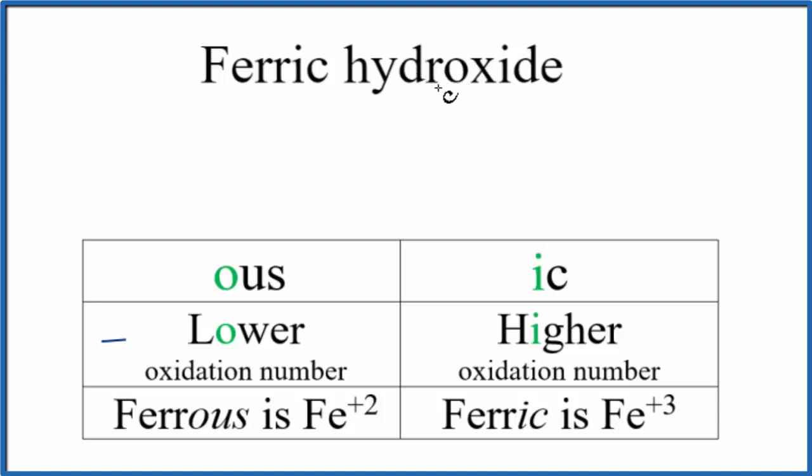In the common naming system, if we have IC that means we're going to use the higher oxidation number. Iron can be plus two or plus three. Since we have IC we're going to choose the higher one, the plus three.